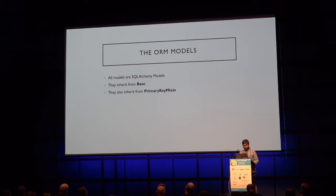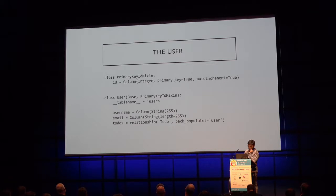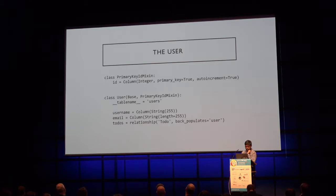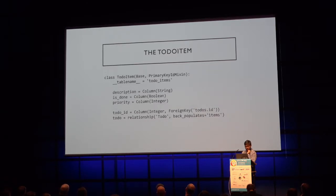We're using SQLAlchemy as our ORM — models inherit from Base and from a PrimaryKeyMixin. The User model inherits from Base (declarative_base in SQLAlchemy) and has username (string), email (string), and a todos relationship. The Todo object has a title, a connection to the user, and items which are todo items. It also has a meta_info field, which is JSONB because we're using Postgres. The TodoItem has description, is_done (Boolean), and priority.